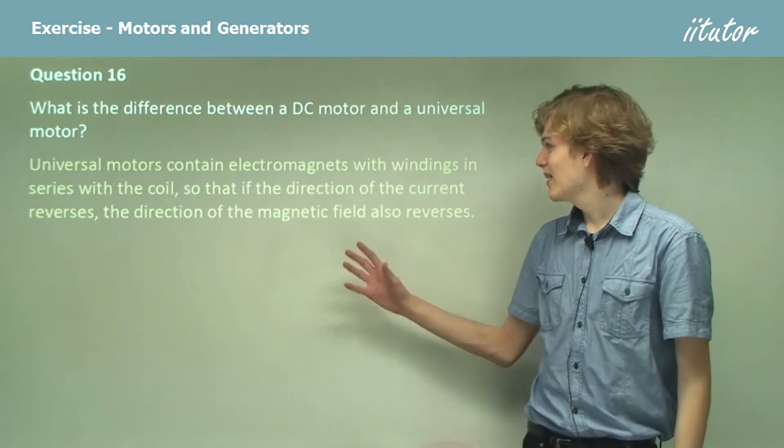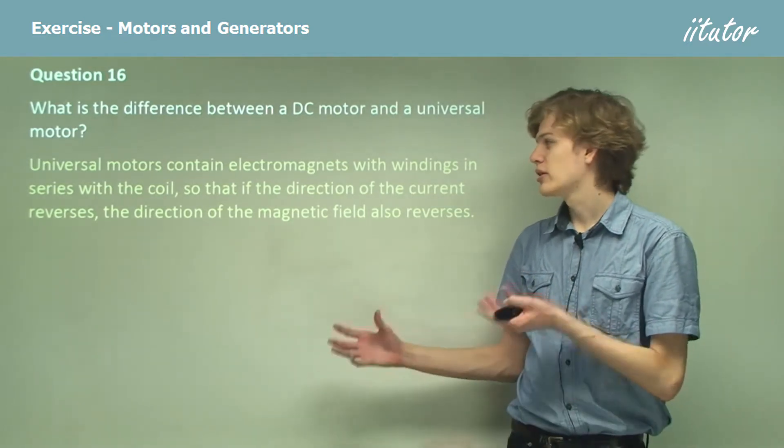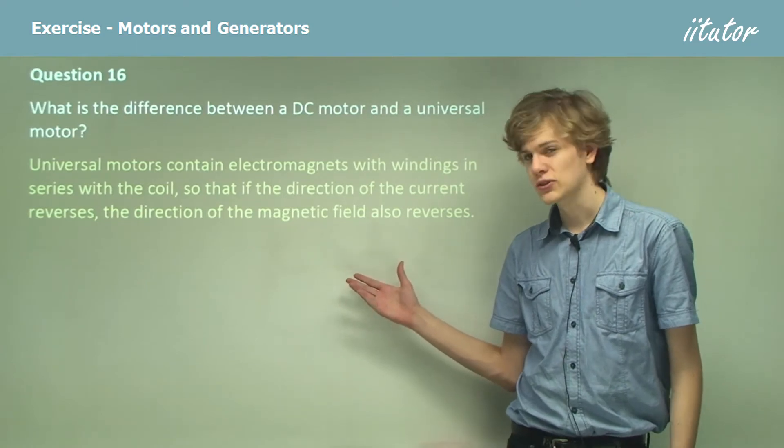Universal motors contain electromagnets with windings in series with the coil. So that if the direction of the current reverses, the direction of the magnetic field also reverses.